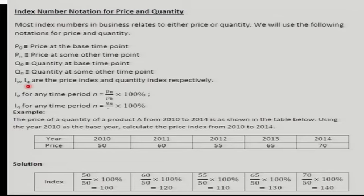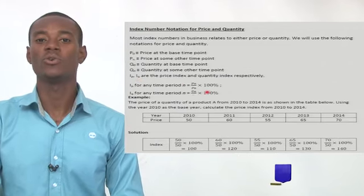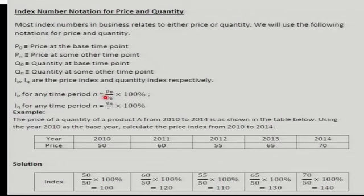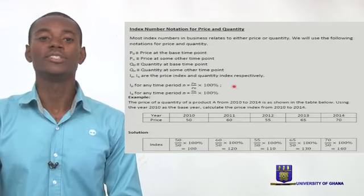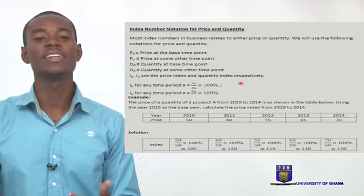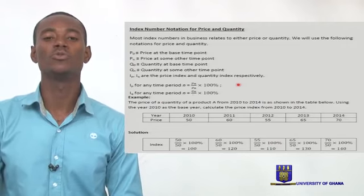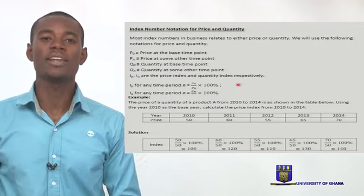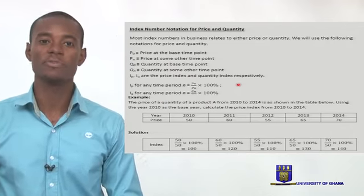The price index formula is: IPₙ = (pₙ / p₀) × 100. Keep in mind that the index at the base period is always 100%, because you are dividing the same value by itself and multiplying by 100. When a dataset is given and you are asked to identify the base period, look for the period where the index equals 100 — that's the clue.